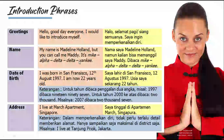Si Maddy mengeja namanya: Mike, Alpha, Delta, Delta, Yankee. Mungkin kalian bertanya-tanya, kok mengejanya Mike, Alpha, Delta, Delta, Yankee? Nanti setelah ini akan kita pelajari bagaimana cara spelling dengan dua cara.